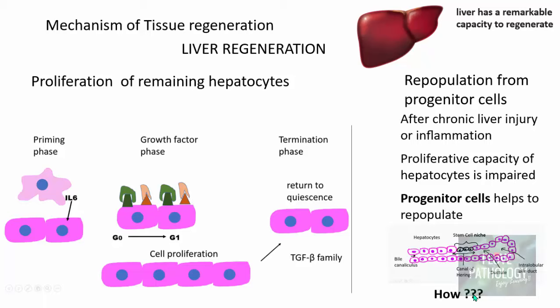The exact mechanism by which progenitor cells accomplish repopulation is not fully known — this is an area of active investigation. In summary, regeneration takes place by proliferation of native cells; in the case of the liver, it is proliferation of remaining hepatocytes. If this is impaired due to chronic inflammation or other reasons, proliferation can also occur by repopulation from progenitor cells, which are essentially stem cells. This same principle applies to almost all organs — we have just understood it by taking the liver as an example.